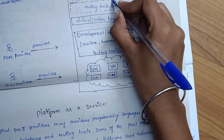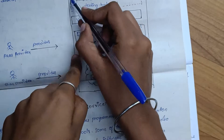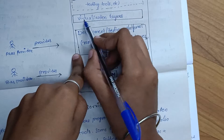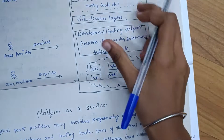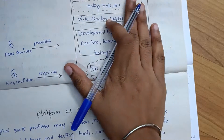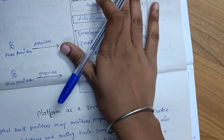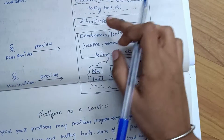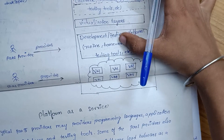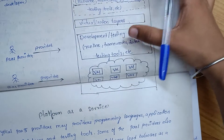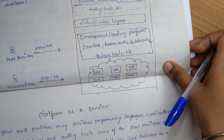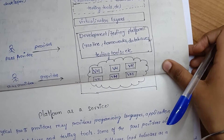Here there is no underline, so this is a full column. This is the next visualization layer, so we can classify this — meaning platform as a service is a load balancing layer, then a virtualization layer. We can choose this platform as a service.